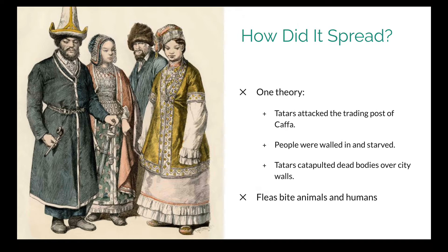One very popular theory about how it spread involves a group of Tartars attacking a trading post in the city of Kafa. They laid siege to this trading post, trying to starve the people inside. Well, the people within the trading post were dying — so what those inside did was load the dead bodies onto catapults and throw them over the city walls, using them as a kind of ammunition.